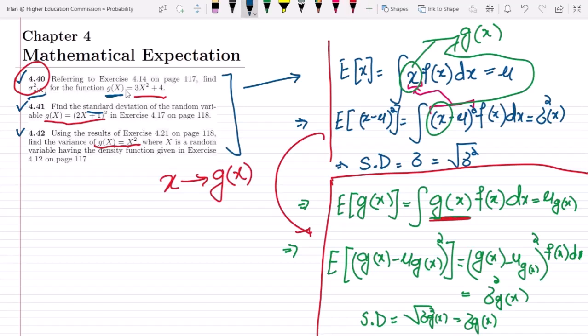In this question referring to exercise 4.14 on page 117, find sigma square g of x for the function g of x equals 3x square plus 4.